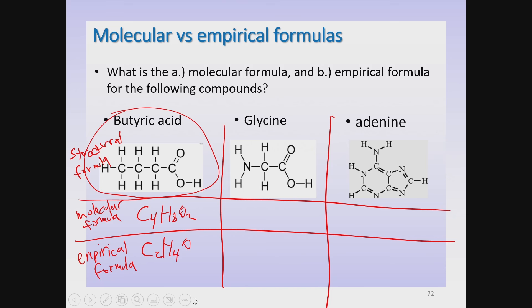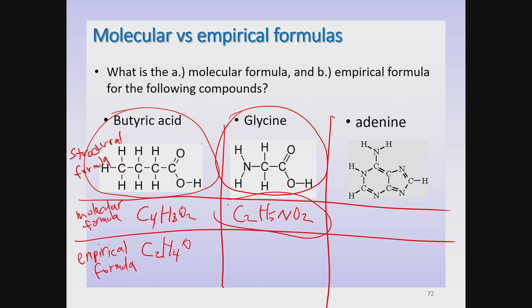Moving on to an amino acid called glycine, let's figure out the molecular formula by counting up the atoms. There are two carbons, five hydrogens, one nitrogen, and two oxygens — giving C2H5NO2. The question is whether we can reduce this to a simpler whole number ratio. There is no single number that goes evenly into two, five, one, and two, so the molecular formula is also the empirical formula: C2H5NO2.